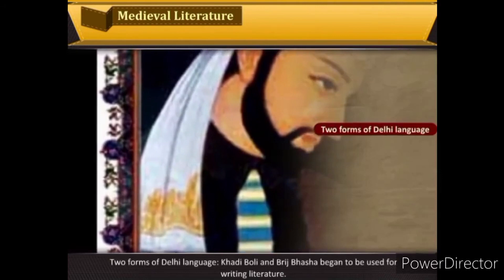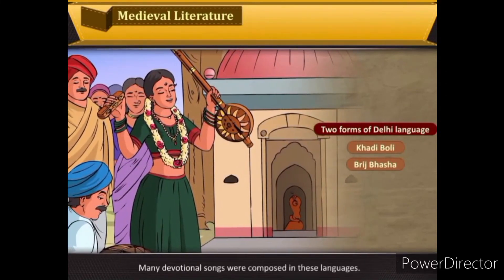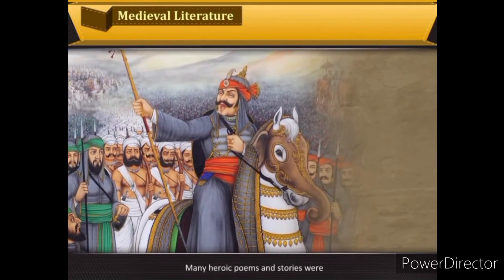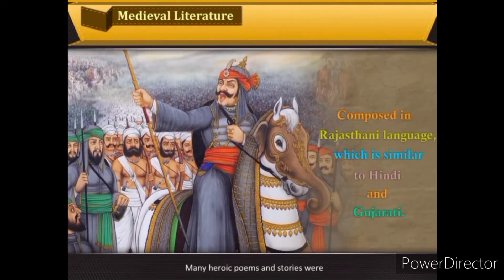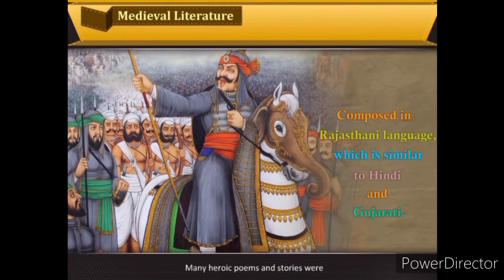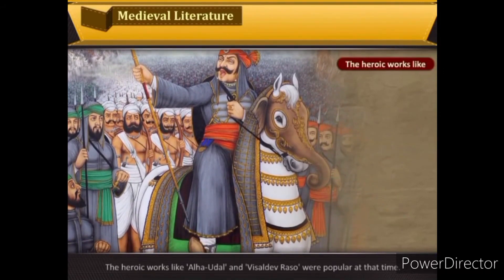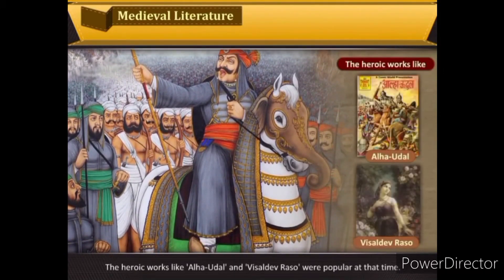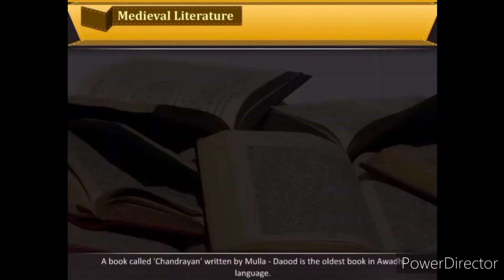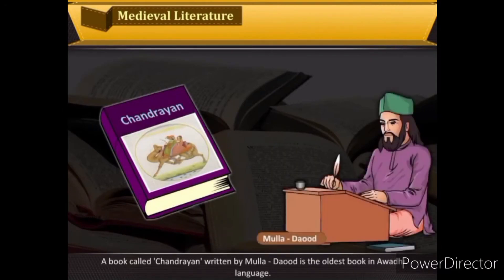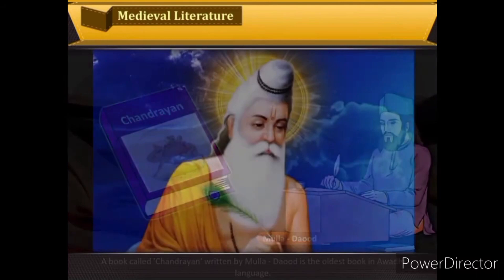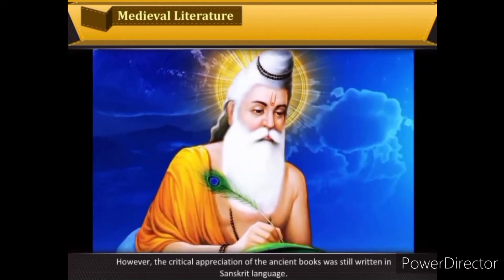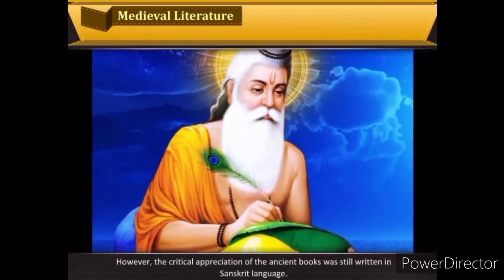The development of Indian languages and composition received a boost during the Delhi Sultanate. Two forms of language — Khadiboli and Braj Bhasha — began to be used for writing literature, and many devotional songs were composed in these languages. Many heroic poems and stories were composed in Rajasthani language. A book called Chandayan, written by Mulla Daud, is the oldest book in Awadhi language. Critical appreciation of ancient books was still written in Sanskrit.